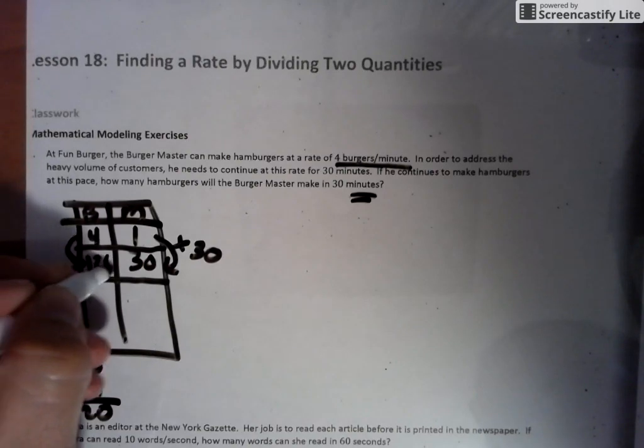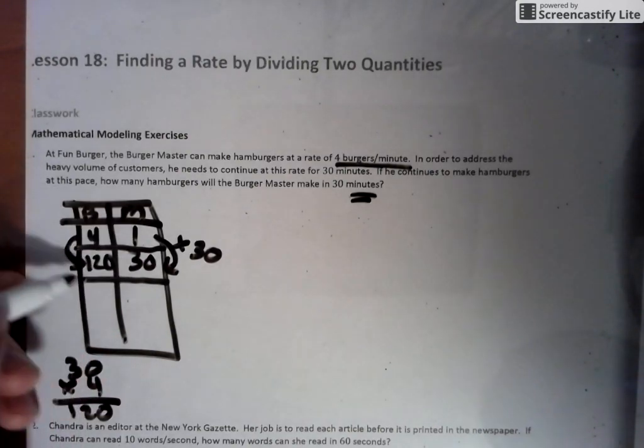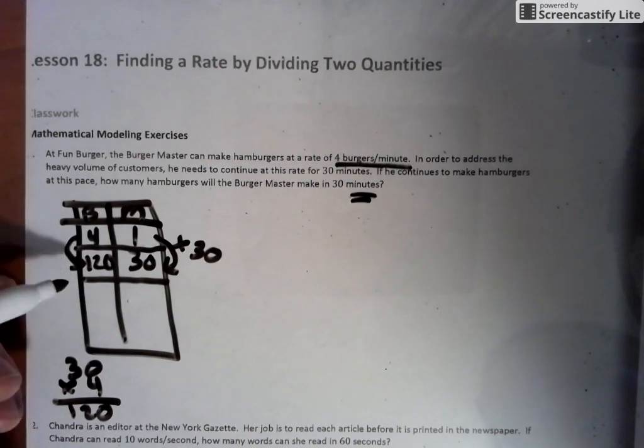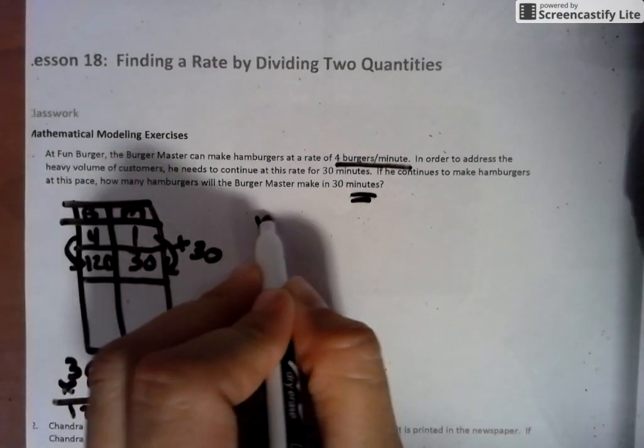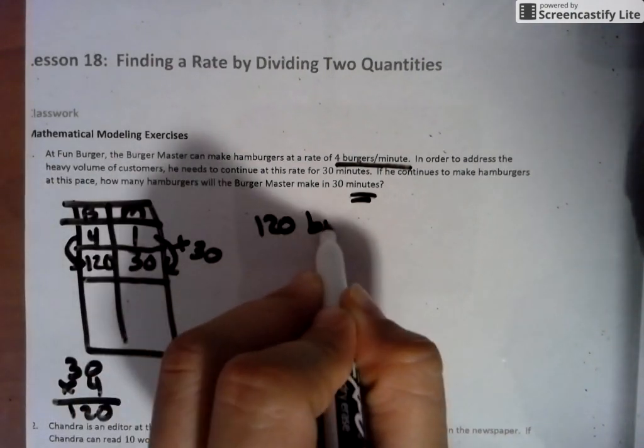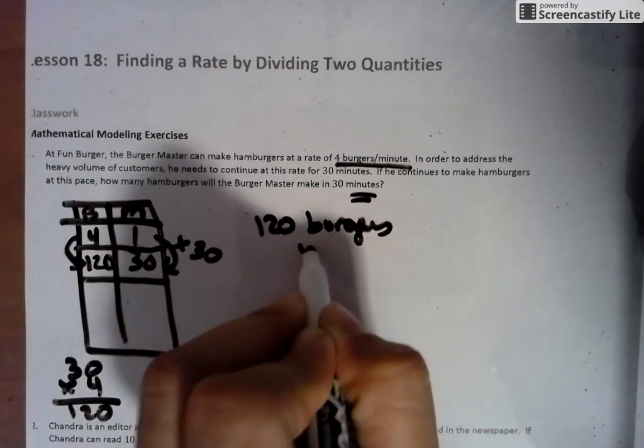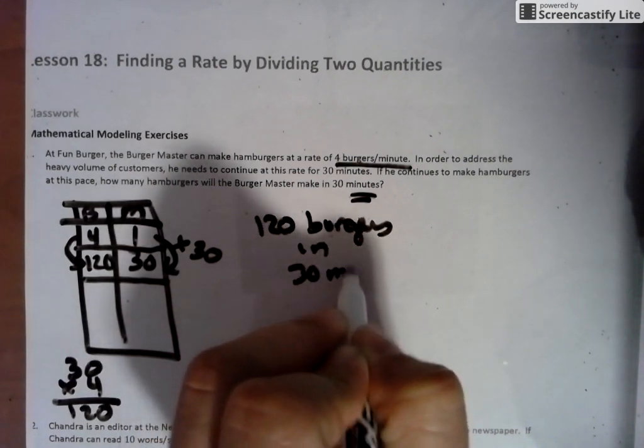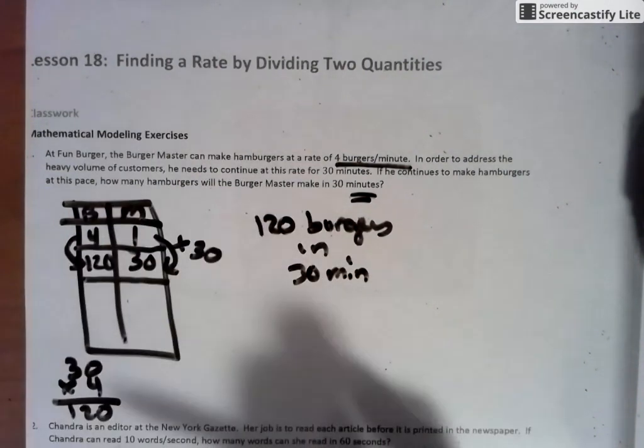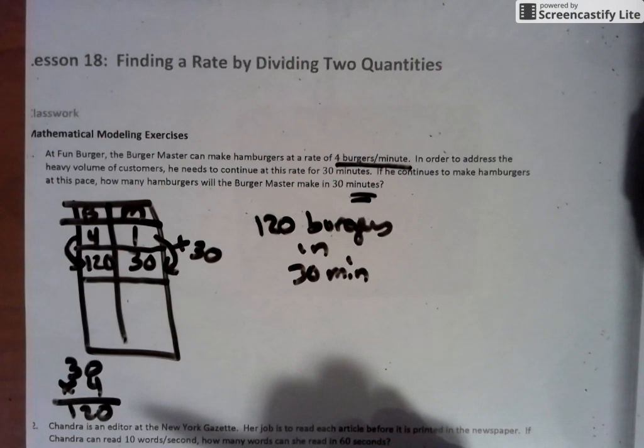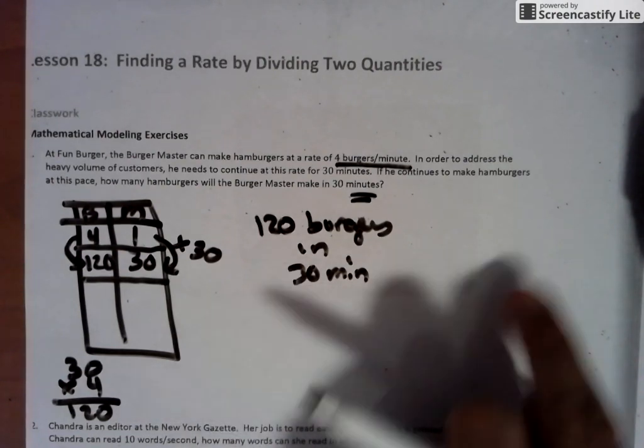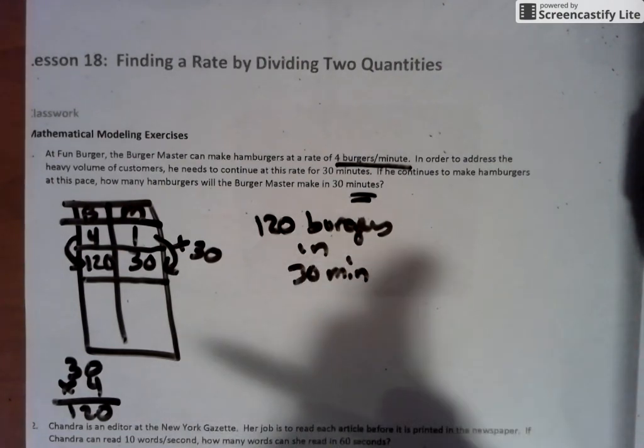So if we do four times 30, and if you have to take it to the side of your paper, you do what you got to do to get the answer that you feel you need to get. So if we use the chart, we would see that if he continued to make hamburgers at this pace, this Burger Master would be making 120 burgers in 30 minutes.